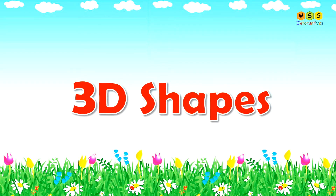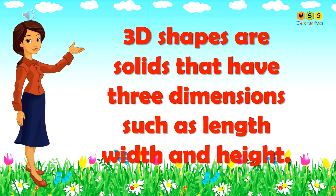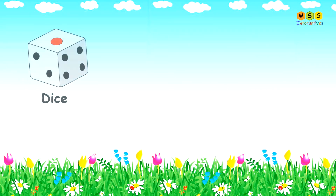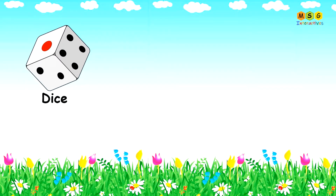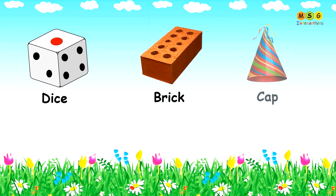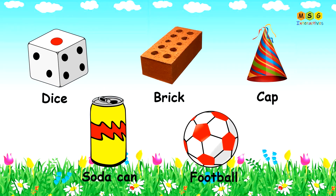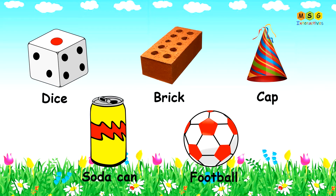3D shapes are solids that have 3 dimensions such as length, width, and height. Solids are shapes that we can see, touch, feel, and hold. Let's have a look at some objects. Can you identify the shape of each object?